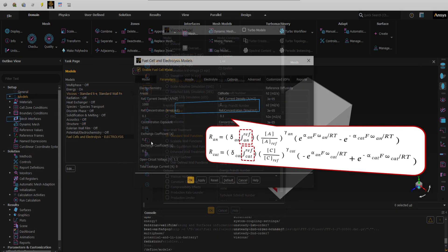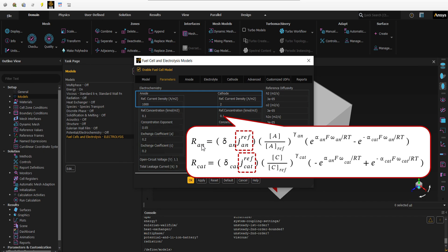The reference current density is equivalent to the reference exchange current density per active surface area. In other words, there is a relation to compute the exchange current density on the anode and cathode sides. The JREF parameters are equivalent to the reference exchange current density on the anode and cathode sides.